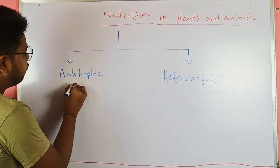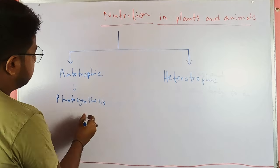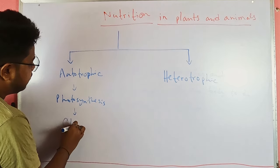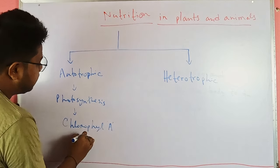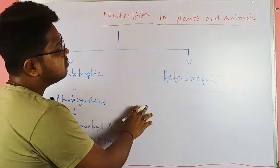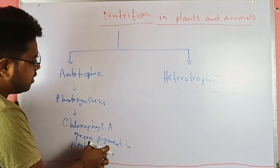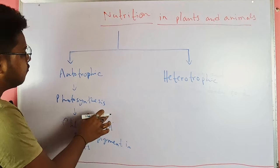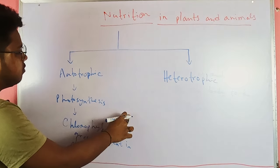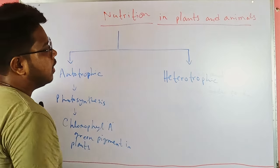Autotrophic nutrition involves mainly photosynthesis, which occurs with the help of chlorophyll — a green-colored pigment in plants. Organisms that don't have chlorophyll as a green pigment cannot opt for photosynthesis or autotrophic nutrition.